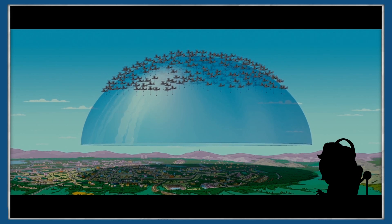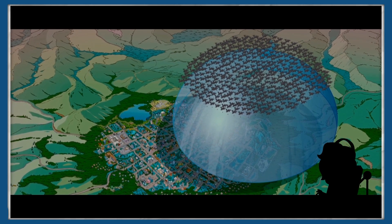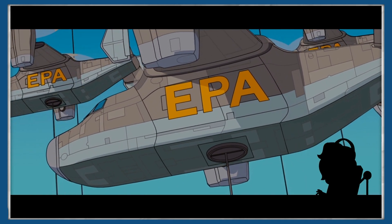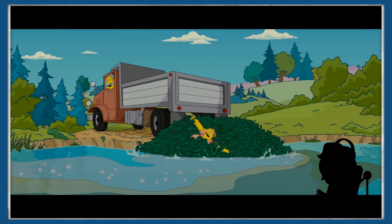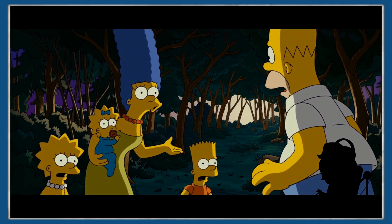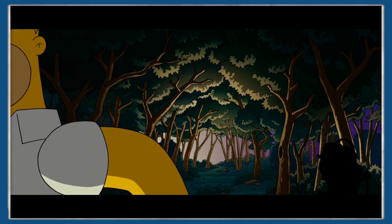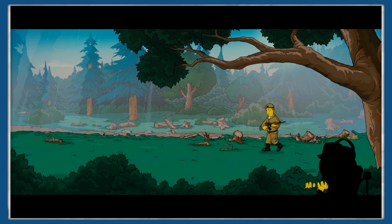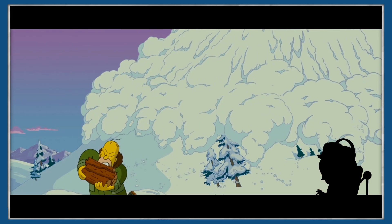The Simpsons movie focuses on Springfield being contained in a dome by the Environmental Protection Agency, or EPA, due to its dangerous levels of pollution. The Simpsons family manages to escape the dome, and the rest of the movie focuses on the family's attempts to escape the EPA and try to save the rest of Springfield. Pigs, Emperor Moe, and antics ensue.